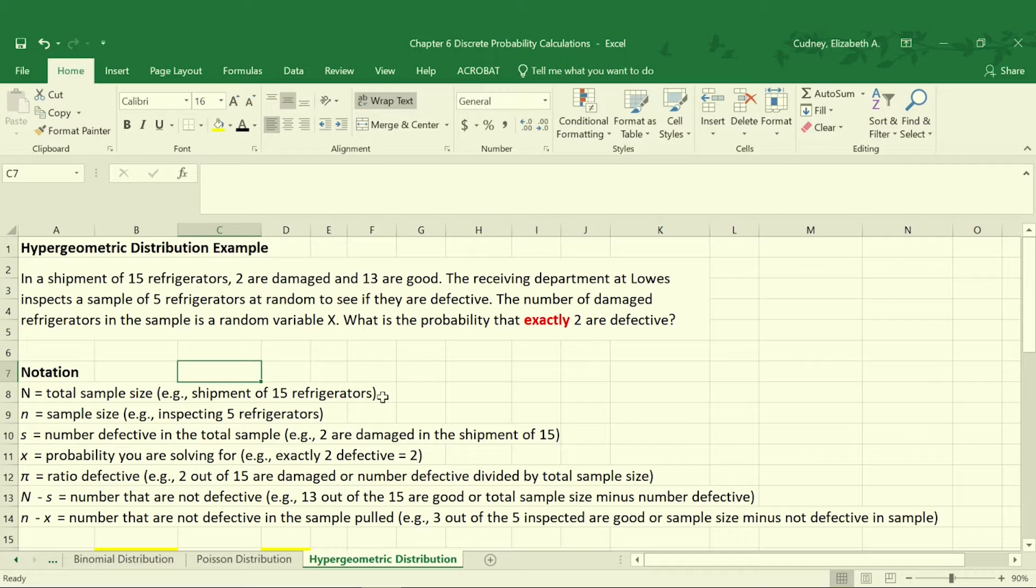What I want to start with in this example first is because there's quite a bit of information, it's just going through the notation. First, we have our capital N. That's our total sample size. Whereas lowercase n is how many we're inspecting. It's that sample size that we're pulling. So in this case, we had 15 refrigerators, but we're going to sample five of them at random. So our lowercase n is that sample that we're pulling out of that shipment.